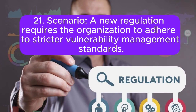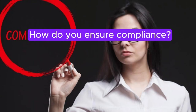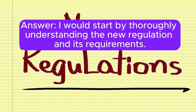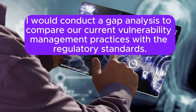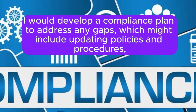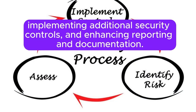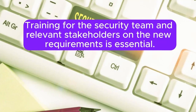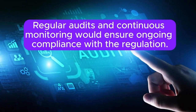Scenario 21: A new regulation requires the organization to adhere to stricter vulnerability management standards. How do you ensure compliance? I would start by thoroughly understanding the new regulation and its requirements. I would conduct a gap analysis to compare our current vulnerability management practices with the regulatory standards, then develop a compliance plan to address any gaps, which might include updating policies and procedures, implementing additional security controls, and enhancing reporting and documentation. Training for the security team and relevant stakeholders on the new requirements is essential. Regular audits and continuous monitoring would ensure ongoing compliance with the regulation.